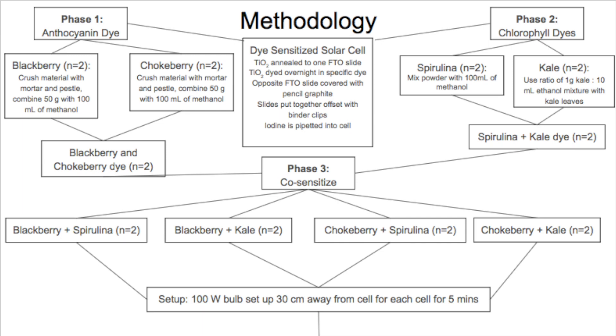The purpose of this experiment is to create an efficient dye-sensitized solar cell by combining dyes to expand their absorption spectrum. The alternate hypothesis is that dye-sensitized solar cells with combined dyes will produce the highest power and efficiency when compared to other groups.